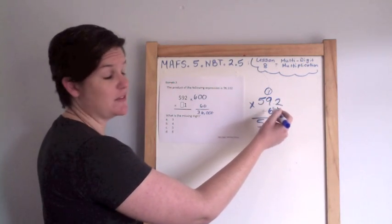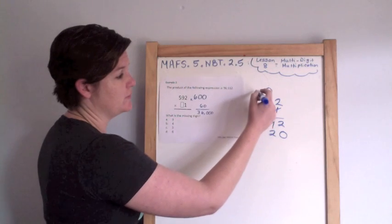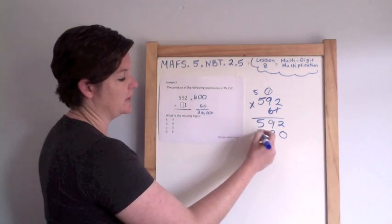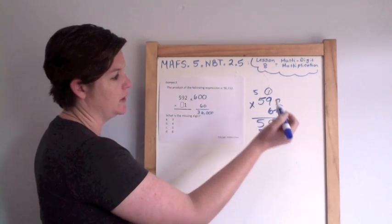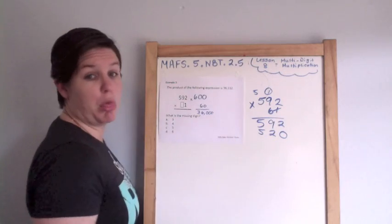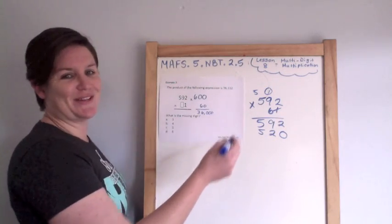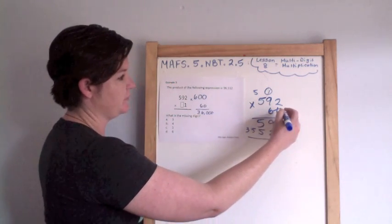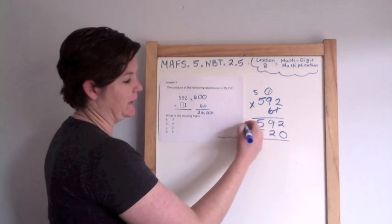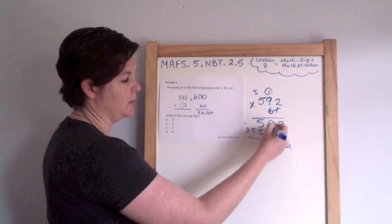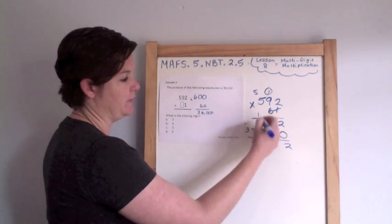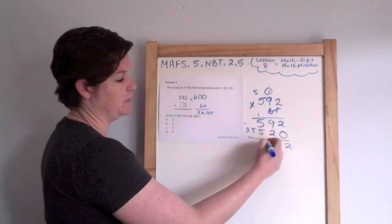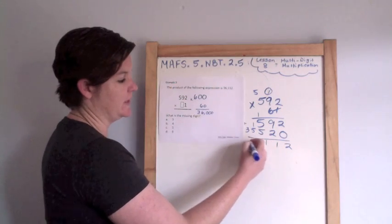6 times 9 is 54, plus 1 is 55. Woo, it's high up here in the clouds. Nice landing, dude. 6 times 5 is 30, plus 5 is 35. Alright, so now I'm adding here. 2 plus 0 is 2. 9 plus 1 is 11. 5 plus 5 is 10, plus 1 is 11. 6, 3. Boom!